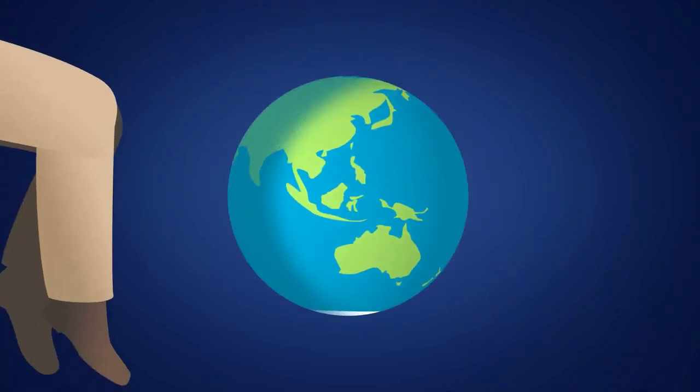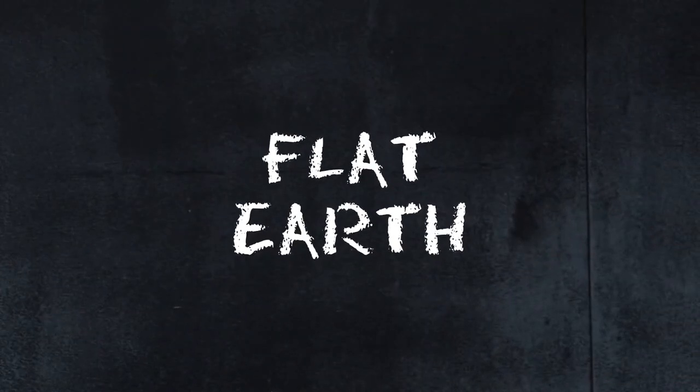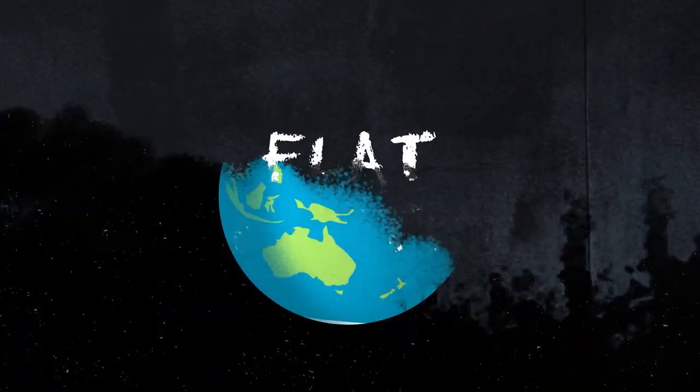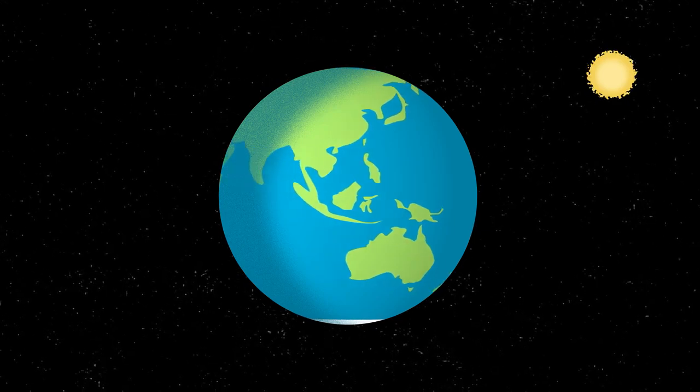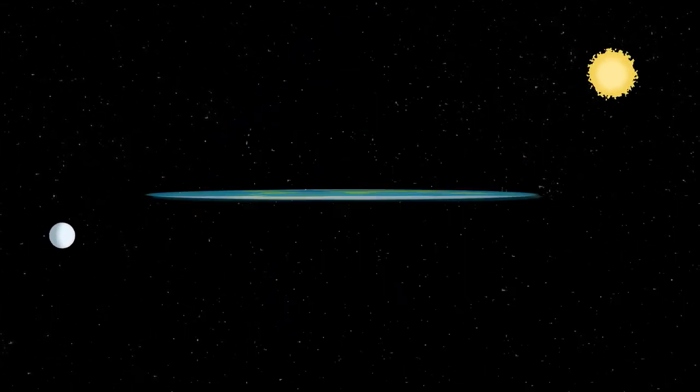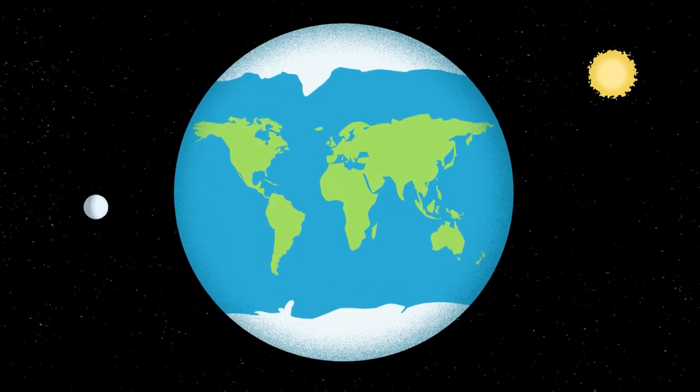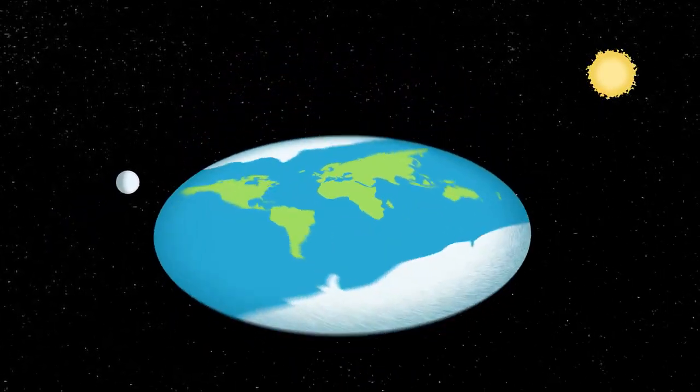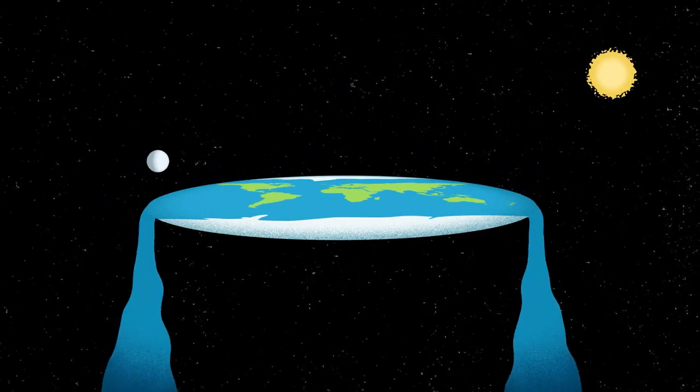A lifetime of indoctrination has given us a knee-jerk reaction to certain terms. Because the heliocentric globe is all we have ever known, when someone suggests that our creation is flat, we imagine some disk floating in outer space, perhaps with water flowing off the edge.